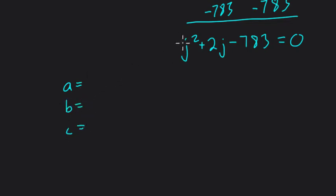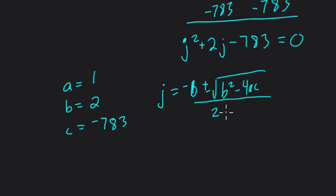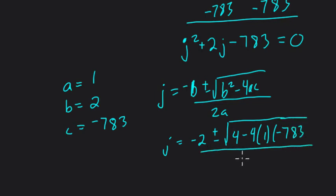So we need to know what A and B and C are. So A is 1, the coefficient of J squared. B is 2, the coefficient of J. And C is negative 783, the constant all by itself. Now, the quadratic formula says that J equals negative B plus or minus the square root of B squared minus 4AC all over 2A. So here, that means that J equals negative 2 plus or minus the square root of 4 minus 4 times 1 times negative 783 all over 2.